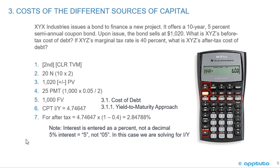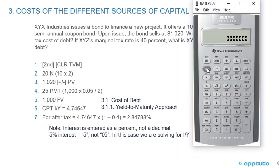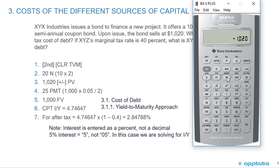Now we're going to work through the problem. XYZ Industries issues a bond to finance a new project: a 10-year, 5% semi-annual coupon bond. Upon issue, the bond sells for $1,020. What is XYZ's before-tax cost of debt, and at a 40% marginal tax rate, what is the after-tax cost of debt? First, confirm parameters: second P/Y shows semi-annual. N equals 20 — 10-year bond semi-annual, so 10 times 2. You can enter 20N, or press 10, second, N to get N equals 20. Now skip to present value: enter 1020, make it negative.